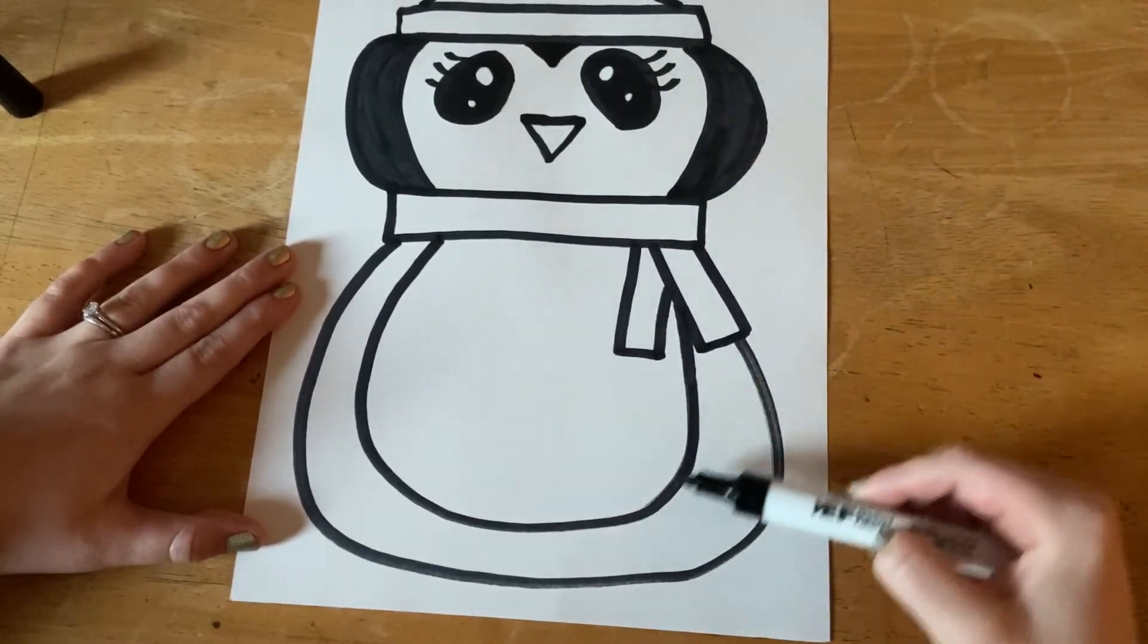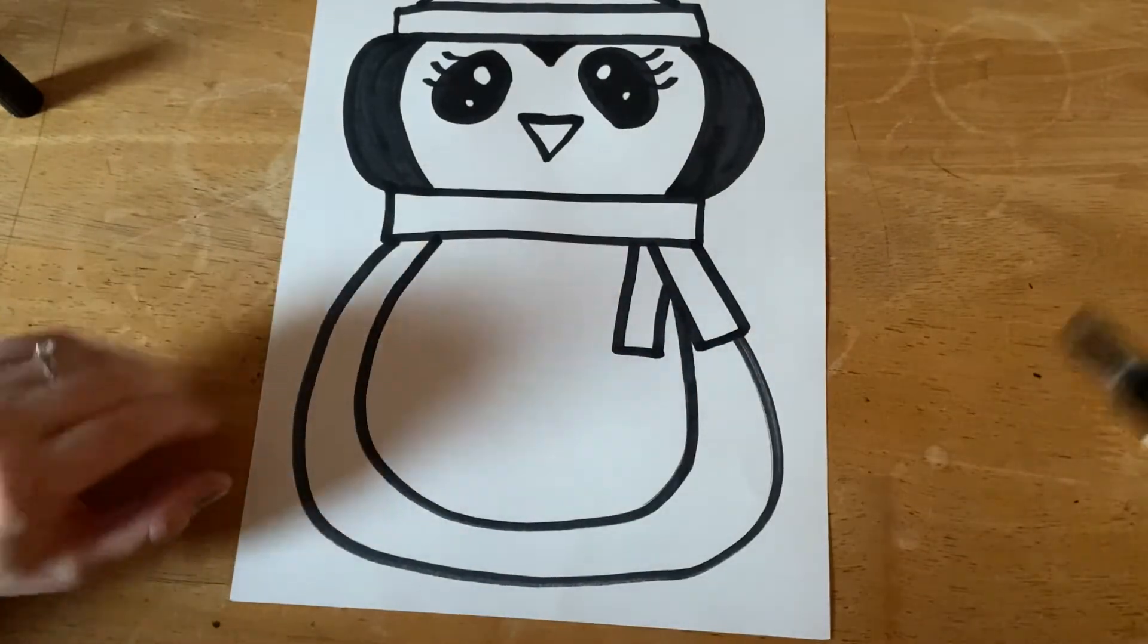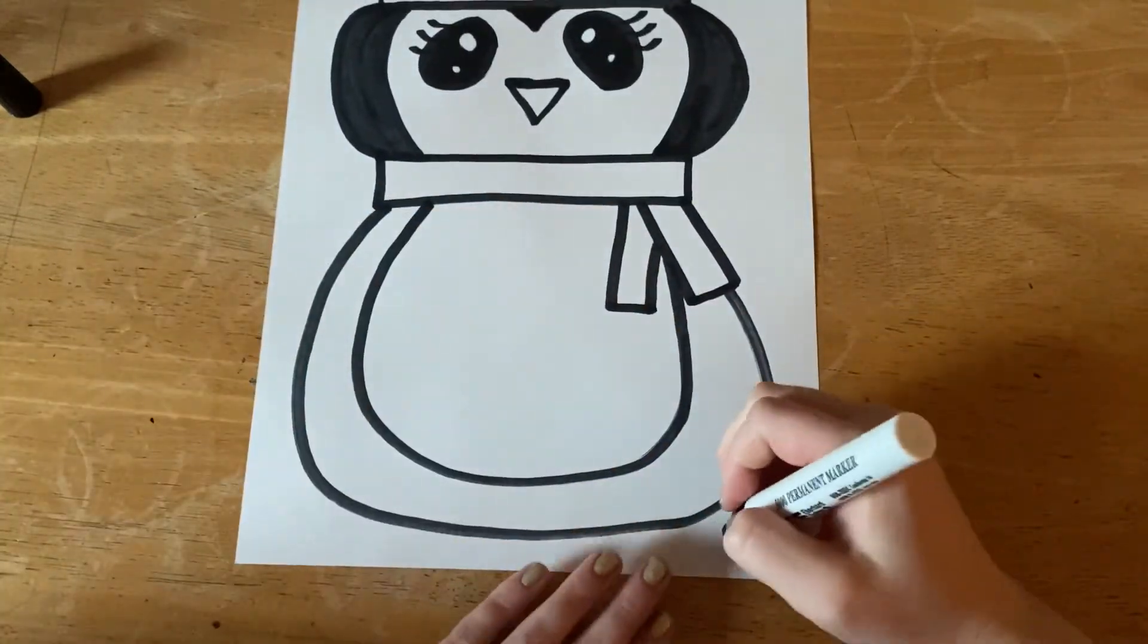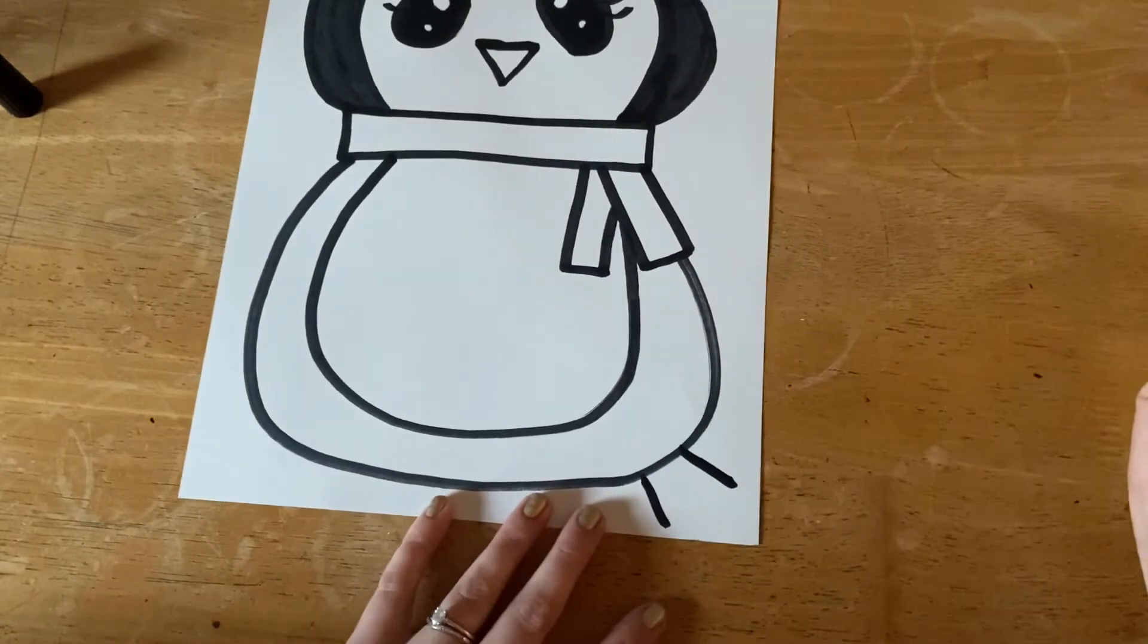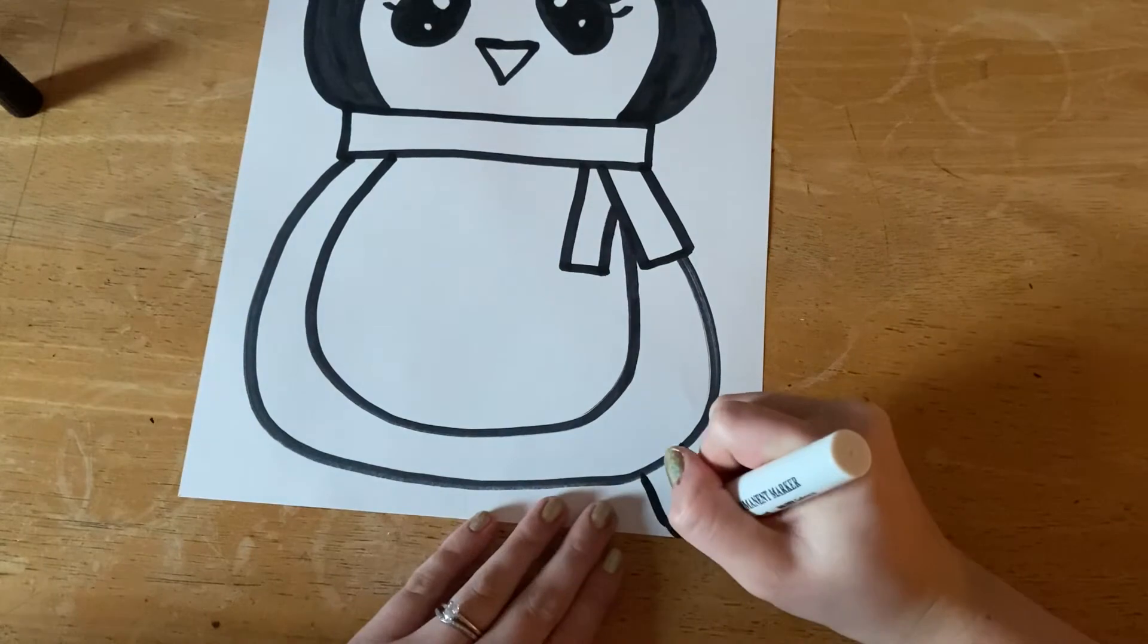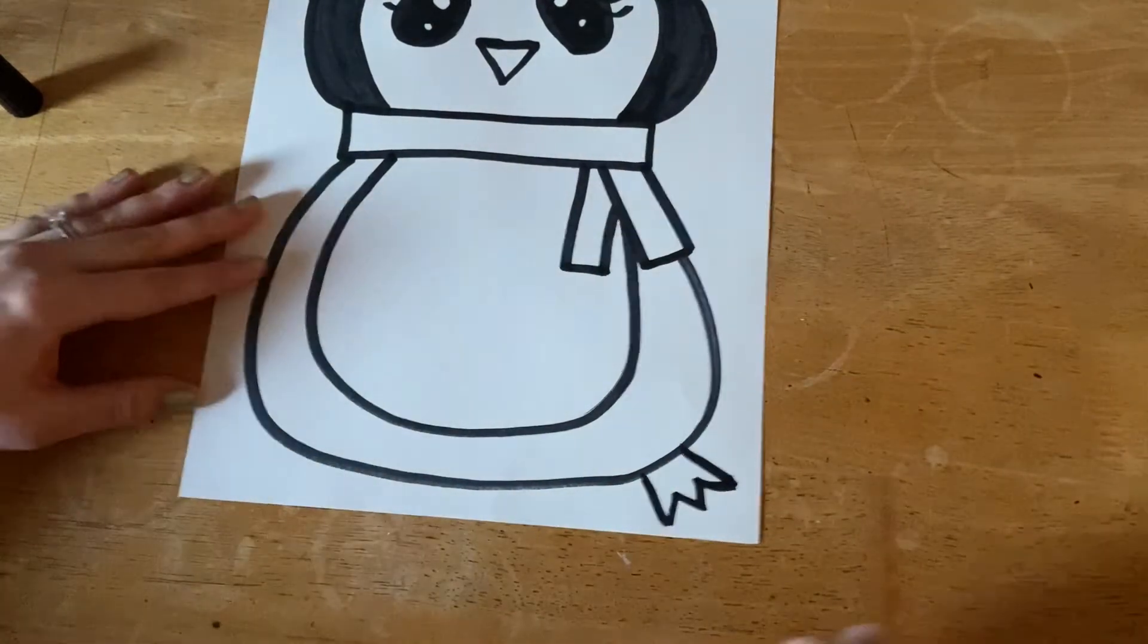...part is black this part will be black, and then the middle, the tummy, will stay white. And then let's add the feet - to add the feet to the side, so two lines, capital letter M. Same thing on the other side.